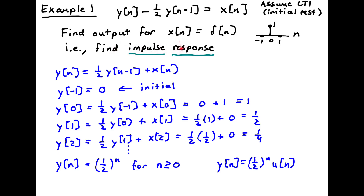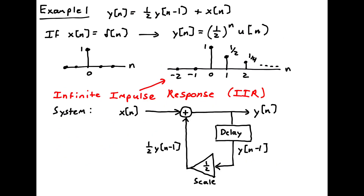That's the recursive solution for the impulse response of this difference equation. The output is zero until n equals zero, then it's one, one-half, one-quarter, and keeps decreasing as (1/2)^n. This is an example of an infinite impulse response (IIR) system: the response starts at time zero and, while approaching zero, is never exactly zero as n goes to infinity — so it's an infinitely long impulse response.